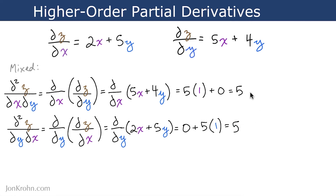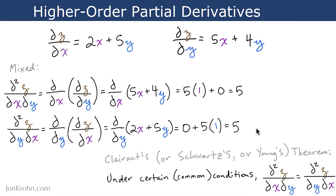That both of these came out to 5 is not a coincidence. This theorem was noticed by a number of people, including a Frenchman, Clairaut, a German named Schwarz, and a Brit named Young, that under certain common conditions, the mixed second-order partial derivatives are often equal to each other like this.